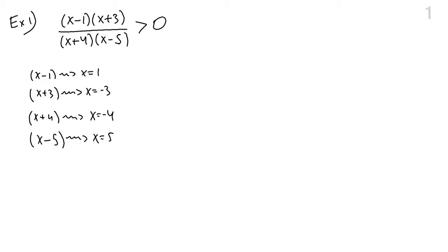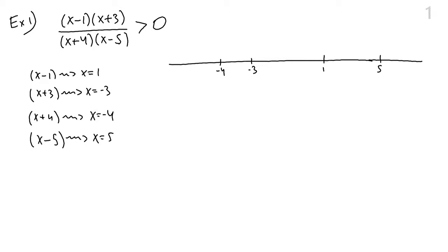We plot all these potential partition points on the number line: negative four, negative three, one, and five. This subdivides the real line into five parts, with four factors to analyze for their signs. For anything greater than five, the two terms in the numerator are positive and the two terms in the denominator are positive, so the product and quotient of these numbers is still going to be positive.